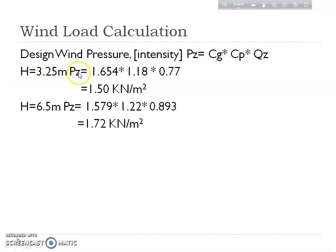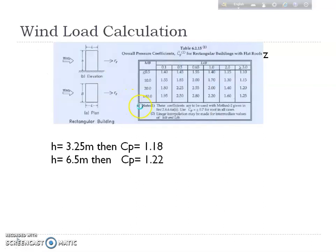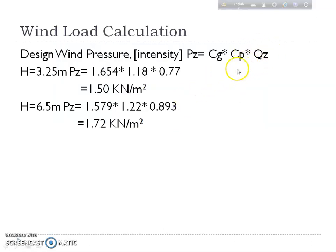Now we calculate the design wind pressure. For 3.25 meters: PZ = CZ(gust) × CP × QZ = 1.654 × 1.18 × 0.77 = 1.5 kN/m². For 6.5 meters: PZ = 1.579 × 1.22 × 0.893 = 1.72 kN/m².